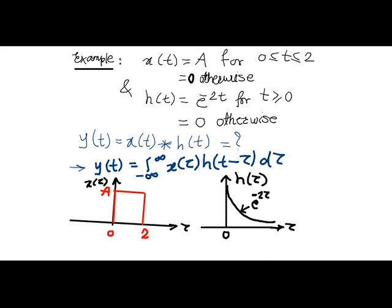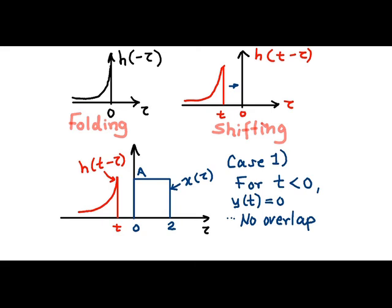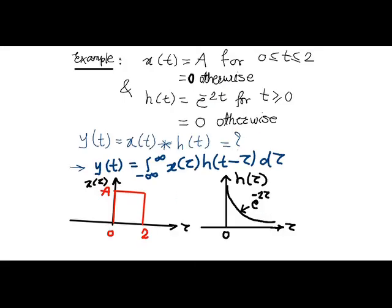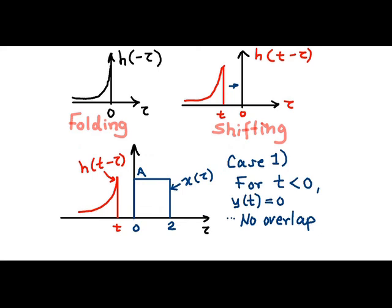In the first step we sketch signals x(τ) and h(τ) as shown in these plots. Followed by sketches of x(τ) and h(τ), we perform a folding operation over h(τ).